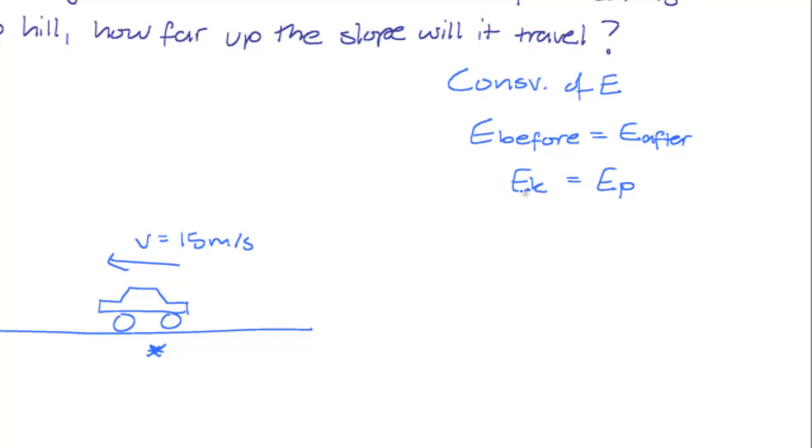Now the formula for kinetic energy is half mv squared, and the formula for potential energy, or gravitational potential energy in this case, is mg times the height, or the change in height, delta H.